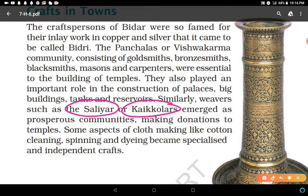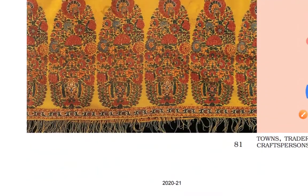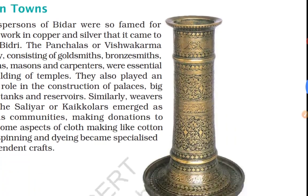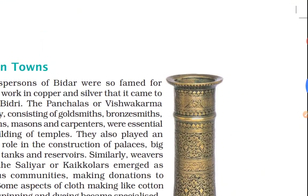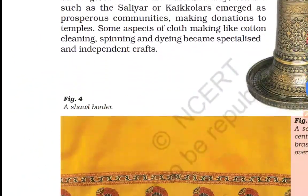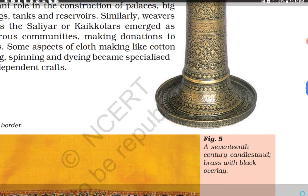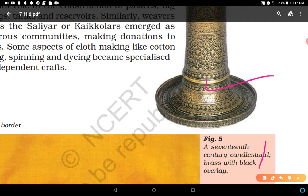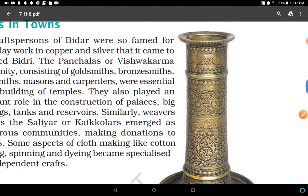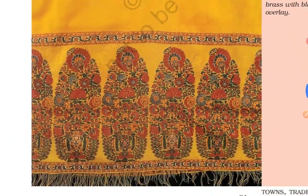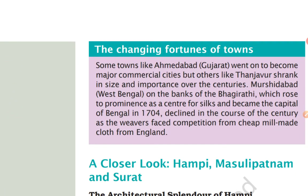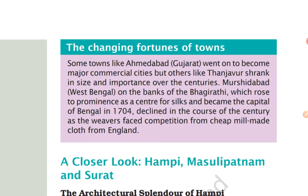Some aspects of cloth making — like cotton cleaning, spinning, and dyeing — became specialized and independent crafts. You can see the image of a shawl border from the 17th century, and a 17th century brass candle stand with black overlay. This illustrates the high quality of craftsmanship in towns.